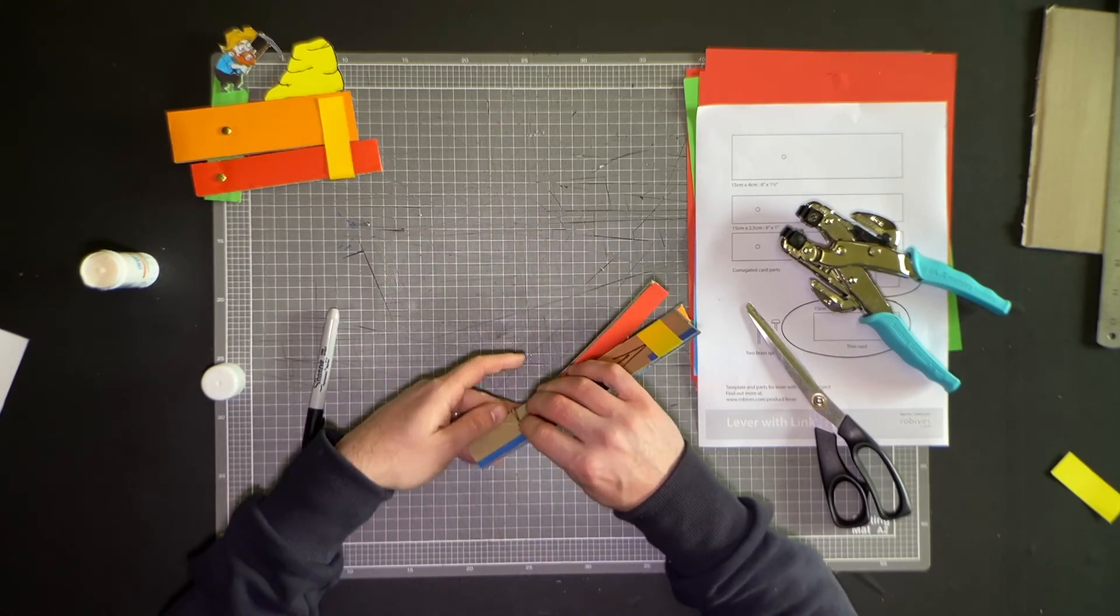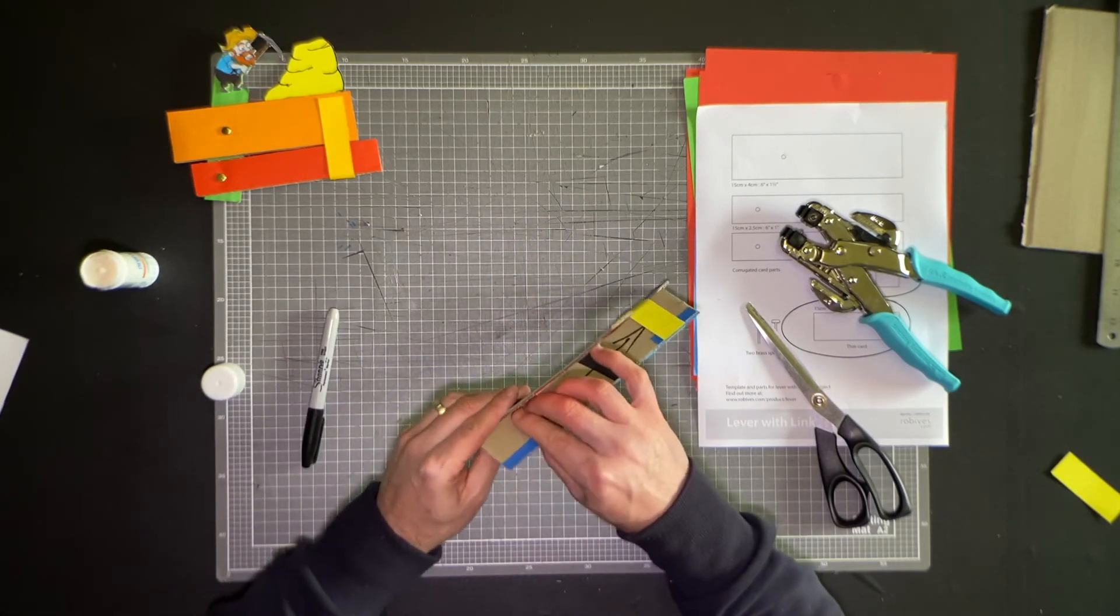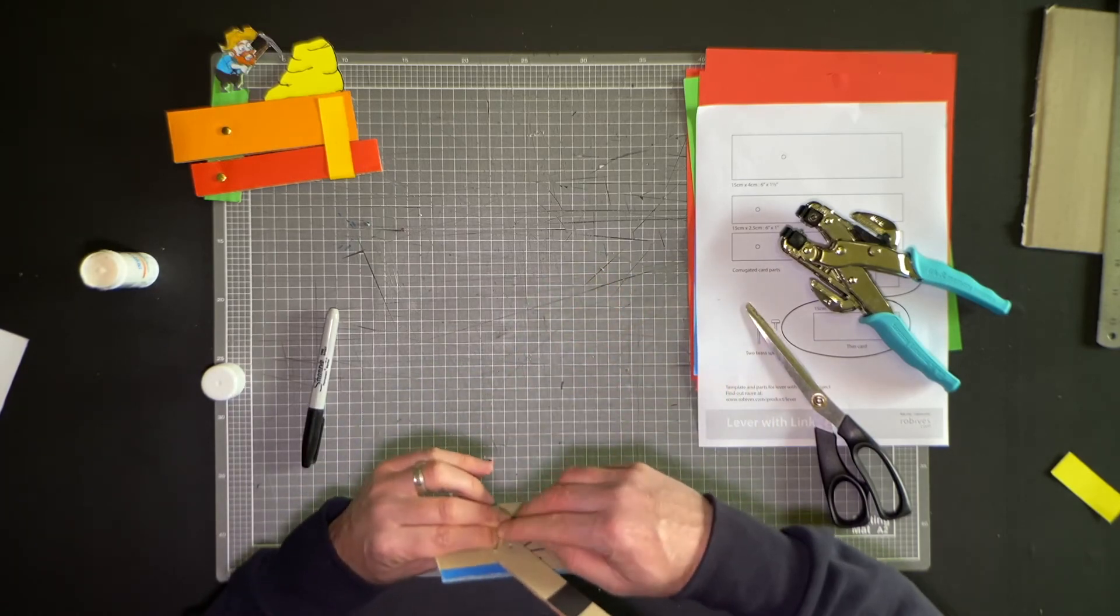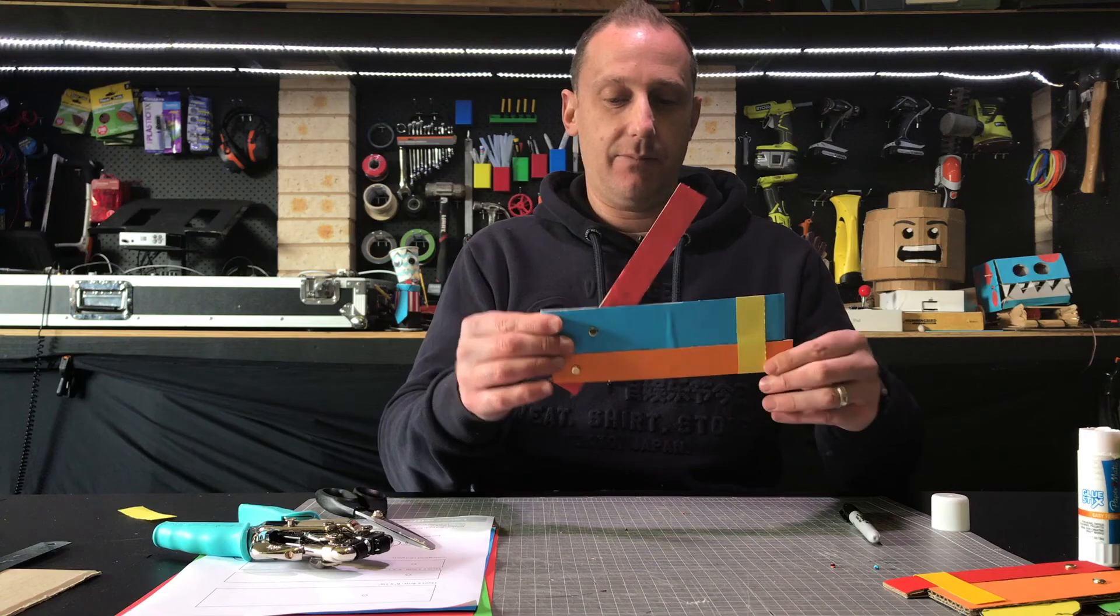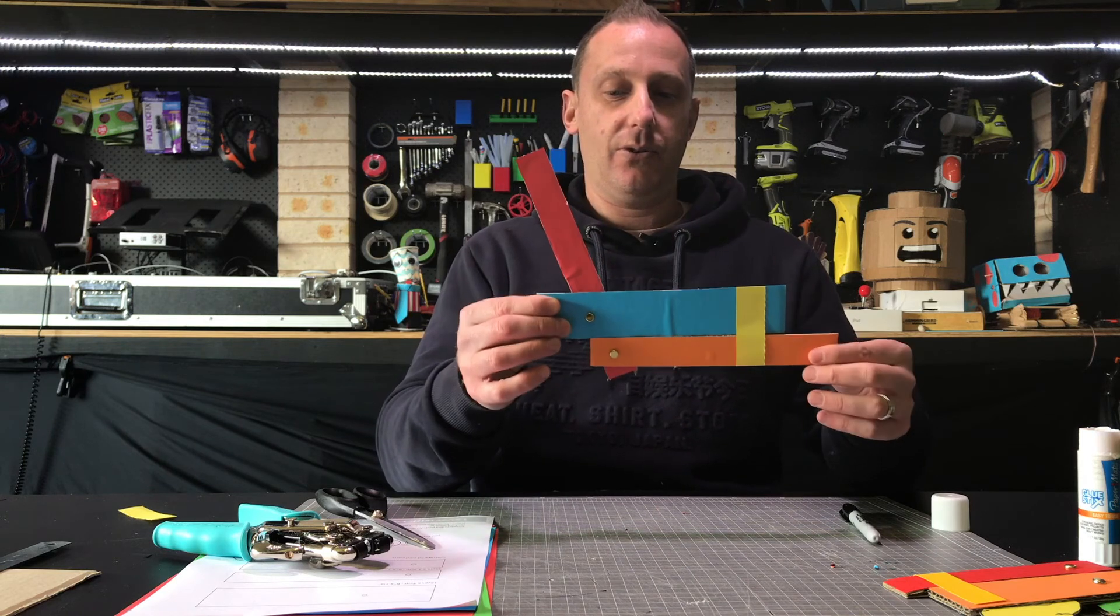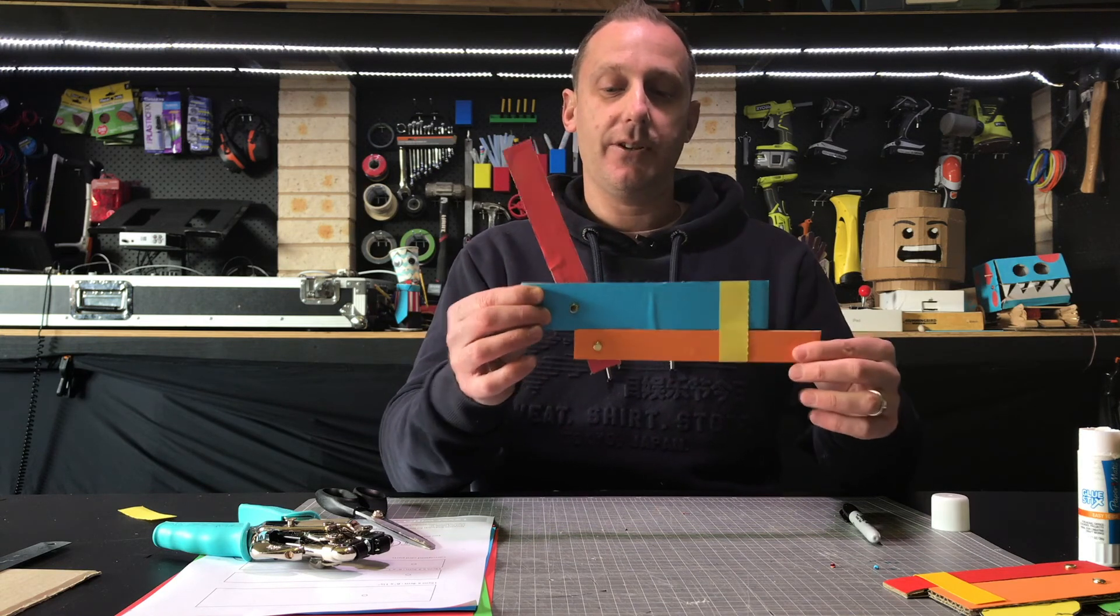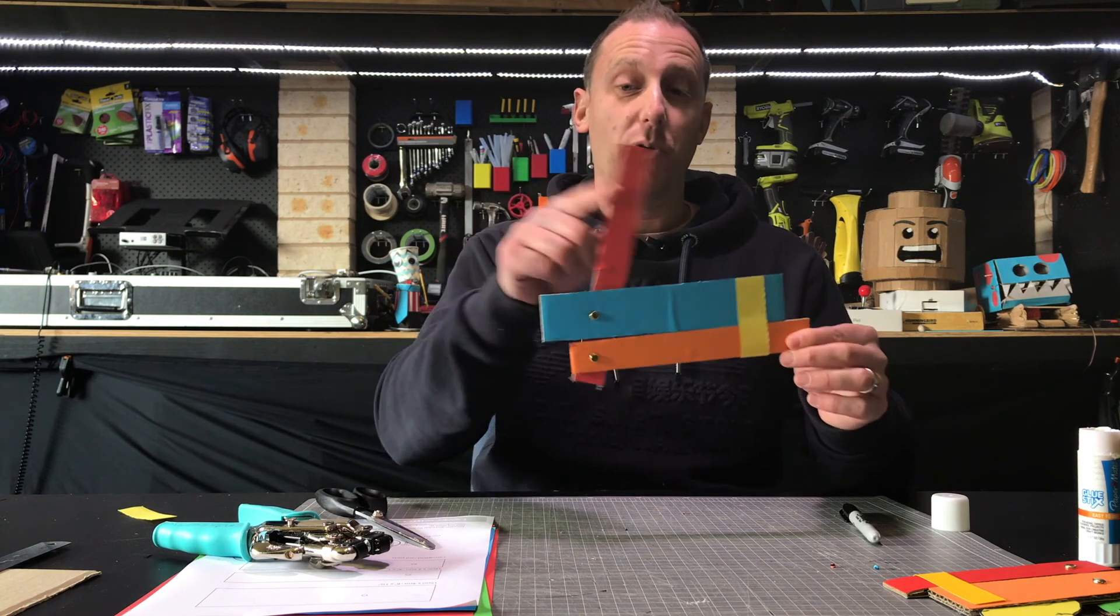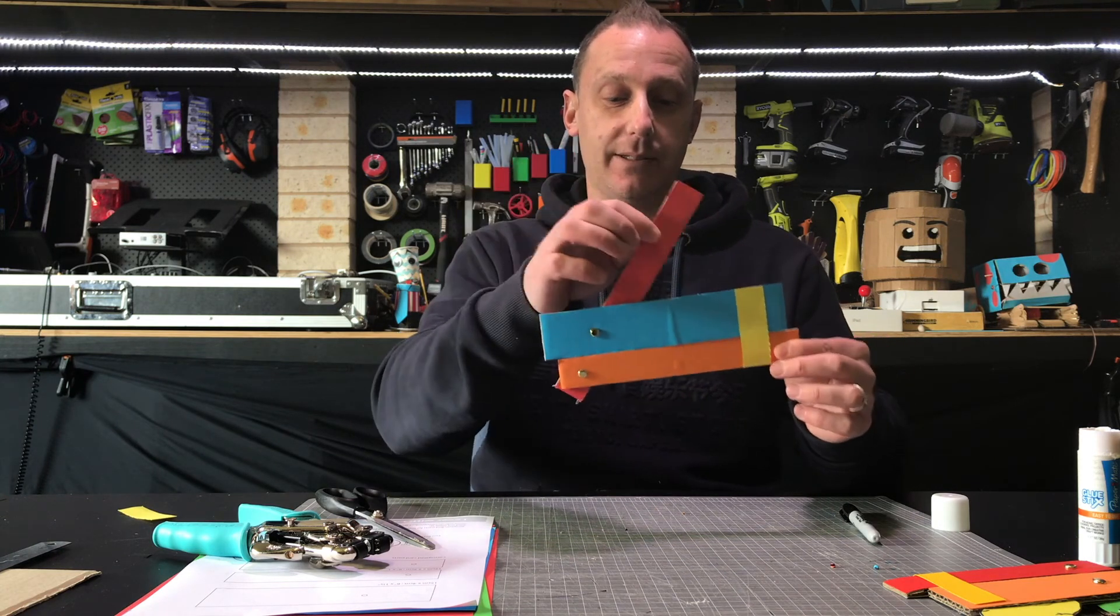So if you need it to move further in one direction, then just play around with where you position the holes. And you'll see it gives you a lot more movement to one side or restricts it to the other. So play around with where you position the holes on this top lever and you'll see that you'll get more movement in this top piece.